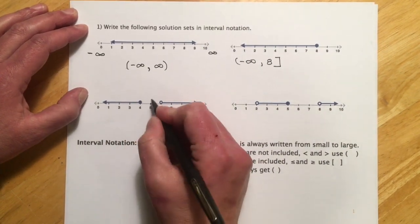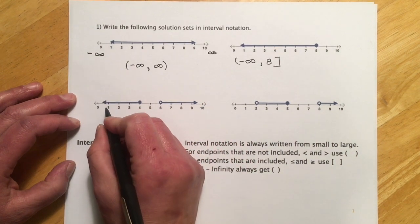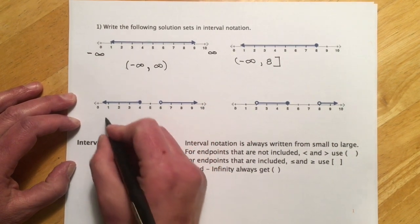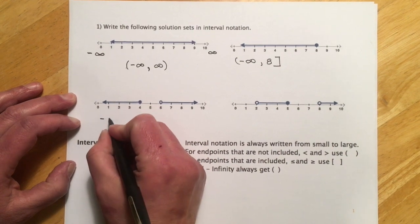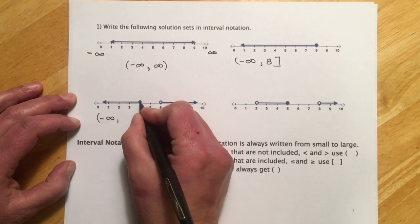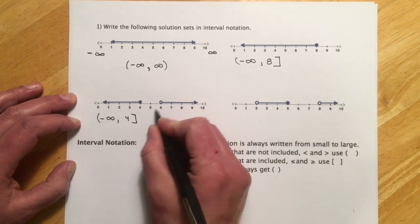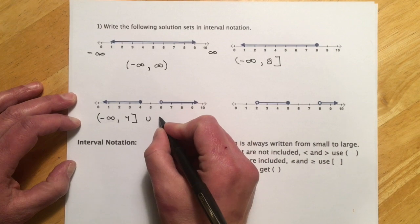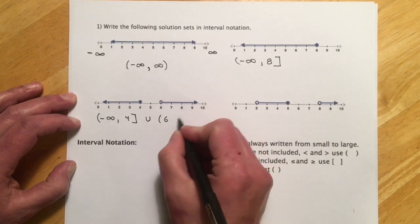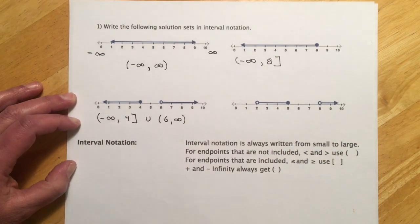This one we have a little gap, so we're going to get a new symbol called union — and I think we saw that back in 094 for the 095s. So this is going to go from negative infinity up to 4, bracket on the 4 because it's a closed dot, then union from 6 with a parenthesis because of the open dot, and then out to infinity. Always left to right.